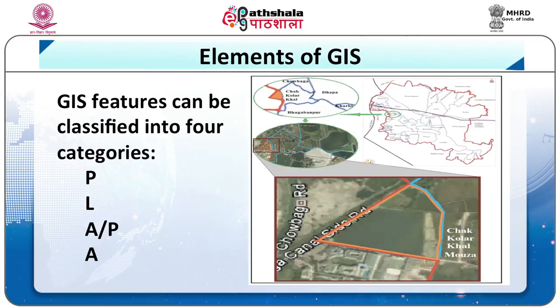Let's find out about the elements of GIS. In GIS, any information you have must be put into the category of P, L, A, and another A — that is PLAA. In the adjacent map from the East Kolkata wetland, you can visualize all these. P is Point — any information that you have, you decide whether to call it a point. For example, on a world map, Delhi is a point, but on a map of India, Delhi is an area.